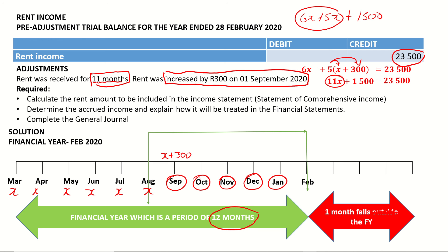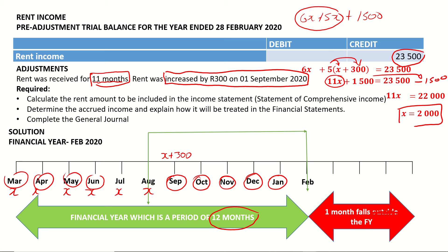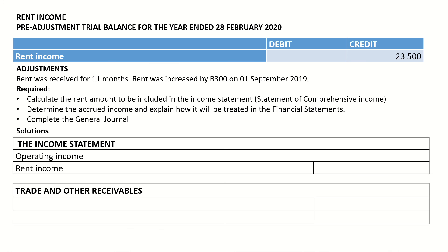Taking 1,500 to the right-hand side gives 11x = 23,500 − 1,500 = 22,000. Dividing by 11 gives x = R2,000 per month. So rent was R2,000 from March through August, and R2,300 (R2,000 + R300) from September onward. February's rent — the missing month — is therefore R2,300. This R2,300 is accrued income, which must be added to the income statement: 23,500 + 2,300 = R25,800 total rent income for the year.